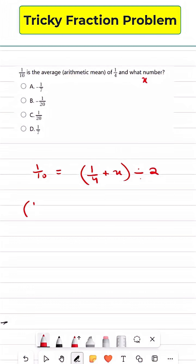So we can say 1 out of 4 plus x. We are going to change this division sign to multiplication sign, so it's just going to become 1 out of 2 because 2 can be written as 2 out of 1. And then this is just equal to 1 out of 10.